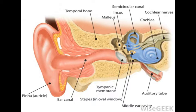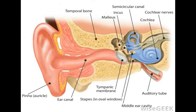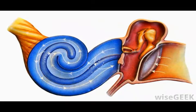The stapes is the smallest as well as the lightest bone in the human body. It has a shape and appearance similar to a saddle with a hole in the middle. The top or head portion is called the capitulum, the sides are the anterior crus and posterior crus, and the bottom section is referred to as the footplate.